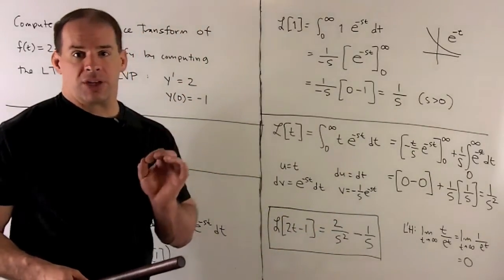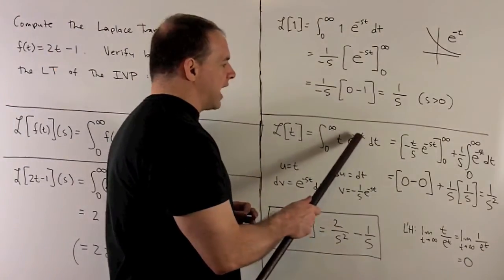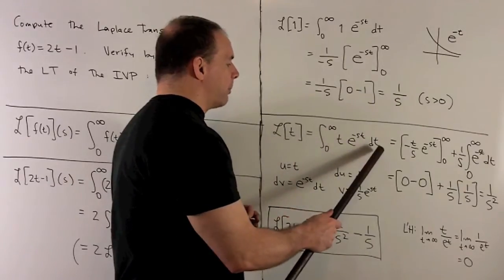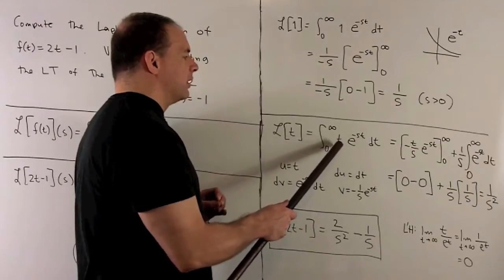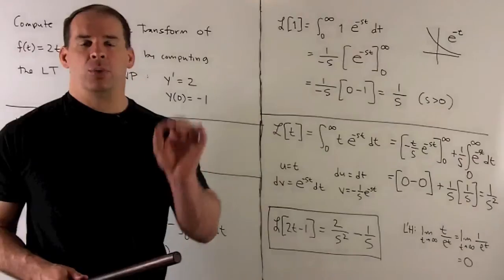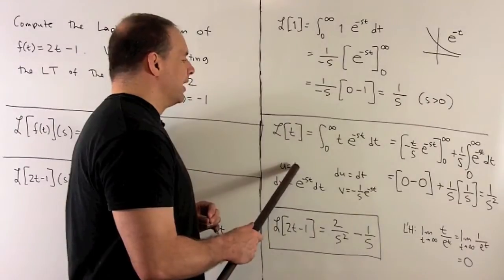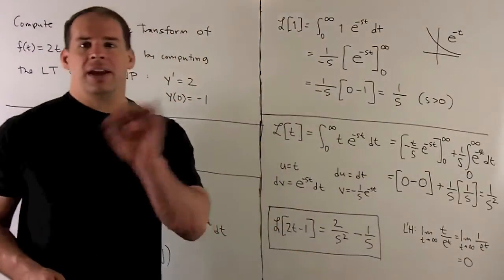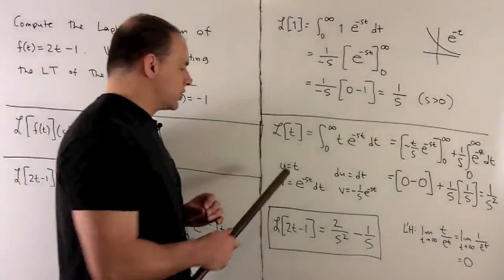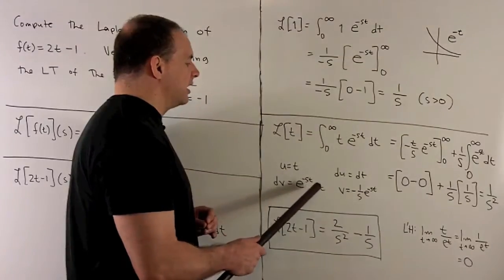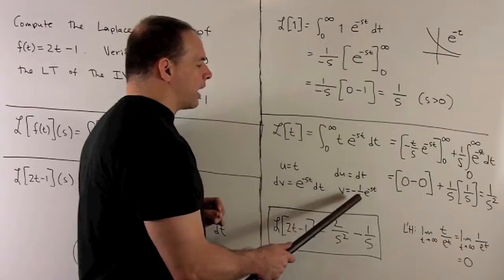For the Laplace transform of t, we plug into the definition and note s is a constant, so we do integration by parts. We want to drive down the t's, so we let u equal t and dv equal e to the minus st dt. Then du equals dt, and taking the antiderivative gives v equals minus 1 over s times e to the minus st.